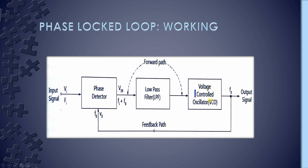The output frequency of the voltage controlled oscillator is directly proportional to the input signal. Both the output frequency and input frequency are compared and adjusted through the feedback loop until the output frequency becomes equal to the input frequency.